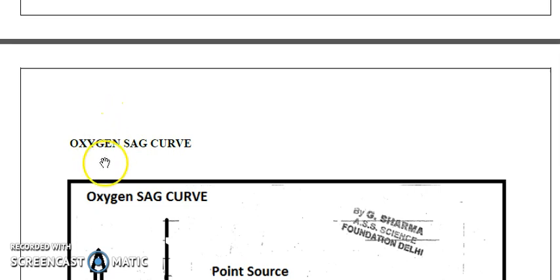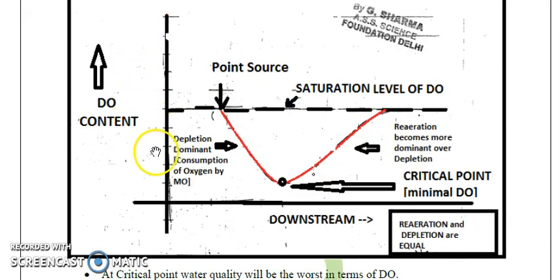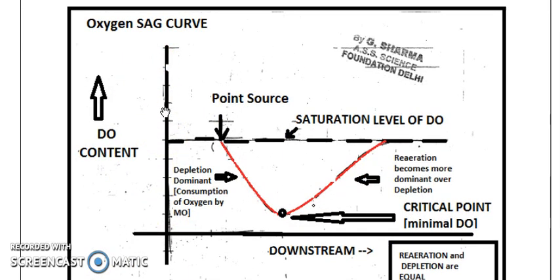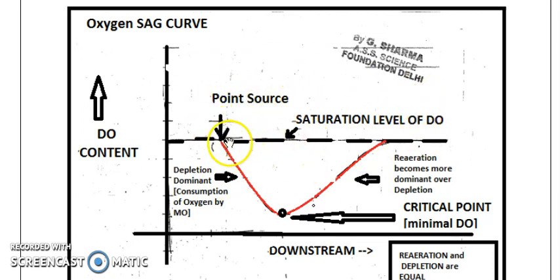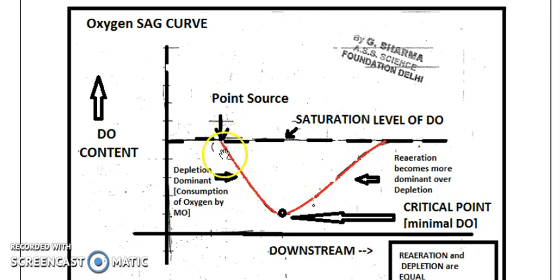Now we will discuss the oxygen sag curve, which is very important. On the y-axis we have dissolved oxygen content and on the x-axis we show the downstream direction. The saturation level of DO is shown with a dotted line. At the point source, we then identify the critical point in the center where DO is minimum, and the curve forms an inverted bell shape.